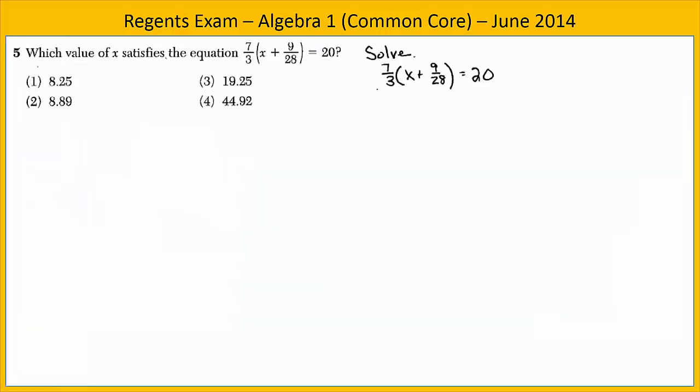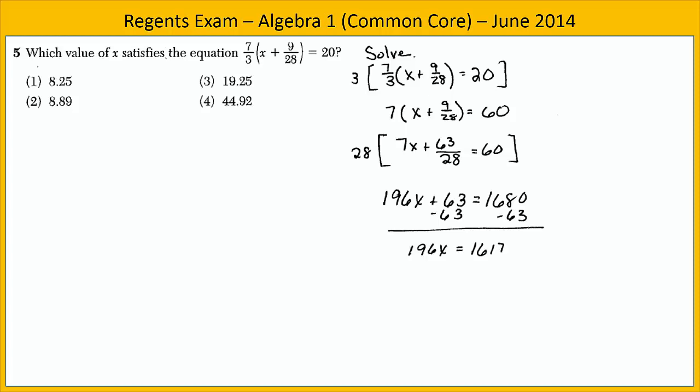In exercise five, we're asked which value of x satisfies the given equation. Remember what that means is what value of x makes this equation true. There are a couple of different ways you could approach a problem like this. The first way is to solve the equation. And this is kind of a challenging one. We could solve this equation by clearing the fractions. Begin by multiplying both sides by three. Then distribute the seven. Again we have another fraction to clear, so we can multiply by 28. And then solve the resulting equation. When we do that, we find that x equals 8.25. And so our answer is choice one.